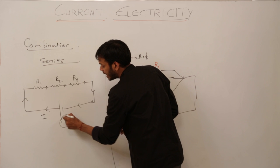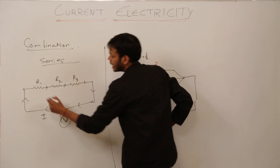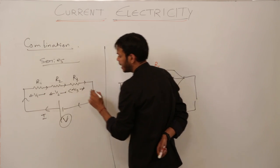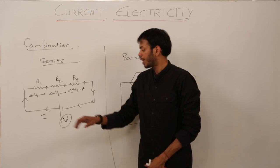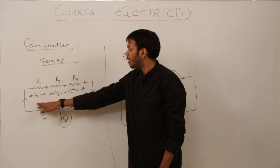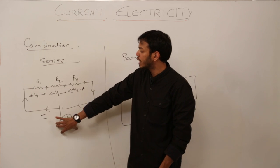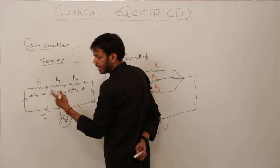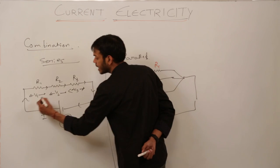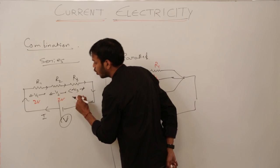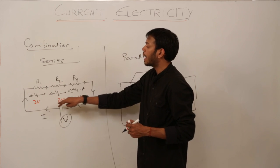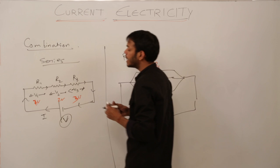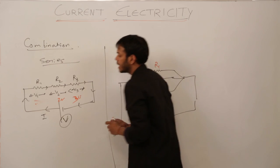This voltage V is getting consumed like V1 across R1, V2 across R2, and V3 across R3. To solve circuits, remember one point: if the total voltage is 6 volts, then V1 plus V2 plus V3 will also equal 6. So the total voltage gets completely consumed in the circuit. Not necessarily in equal proportion — it can be 1 volt, 2 volt, and 3 volt — that can happen only if resistors are of equal magnitude.